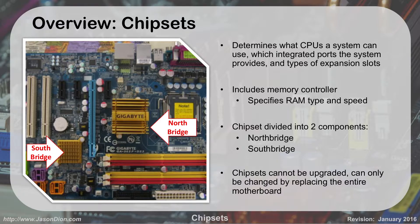Just because you have an ATX board doesn't mean you get three expansion slots that are PCIe X1 and two PCIe X16s — the chipset determines that. This includes your memory controllers, so it's going to specify the type of RAM you can use. Can I use DDR2 or DDR3? Can I use ones operating at 6400 megabits per second or 18,000 megabits per second? All that's determined by the chipset.